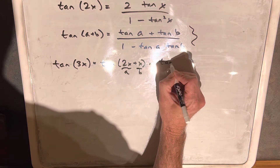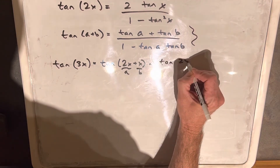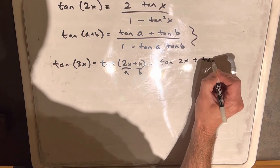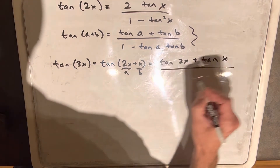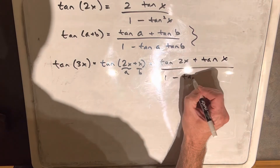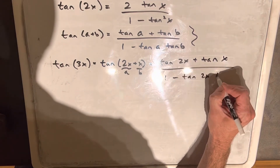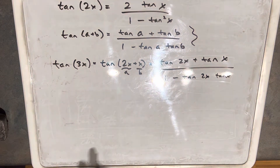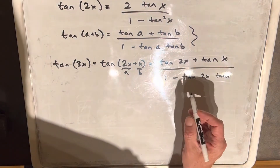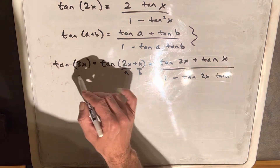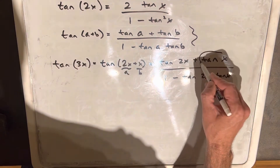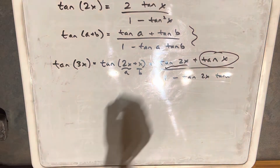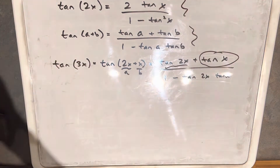So we're going to say this is going to be tangent of 2x plus tangent of x, over 1 minus tangent of 2x times tangent of x. Now we want to reduce it all the way so we have the triple angle in terms of just a single angle — we want to get rid of these double angles, but we have our double angle formula up top.